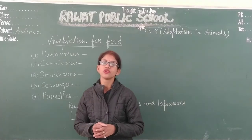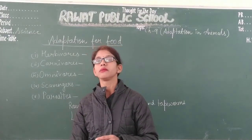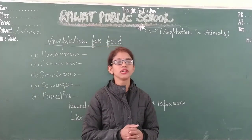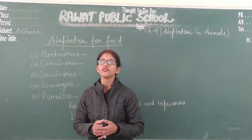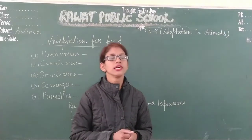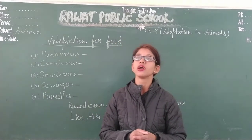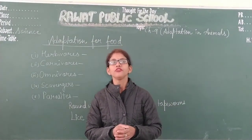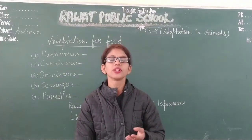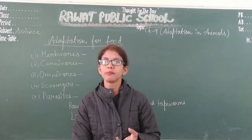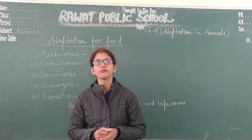Aerial animals are the animals that fly; mostly all the birds fall under this category. They have certain features like hollow bones that make their body light, wings to fly, and feathers all over their body. Insects like dragonfly and butterfly have papery wings that help them to fly.